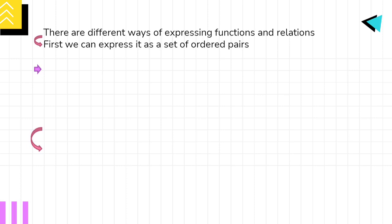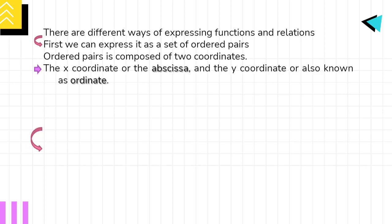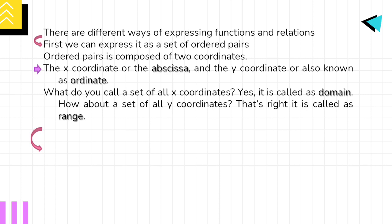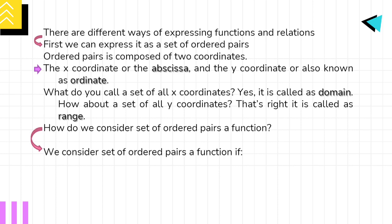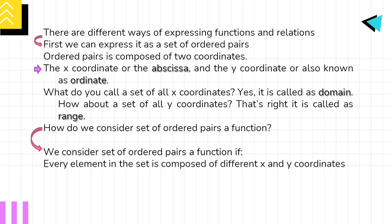There are different ways of expressing functions and relations. First, we can express it as a set of ordered pairs. Ordered pairs are composed of two coordinates: the x-coordinate or abscissa, and the y-coordinate also known as ordinate. The set of all x-coordinates is called the domain, and the set of all y-coordinates is called the range. We consider a set of ordered pairs a function if every element in the set has different x-coordinates — no common x-coordinates exist.